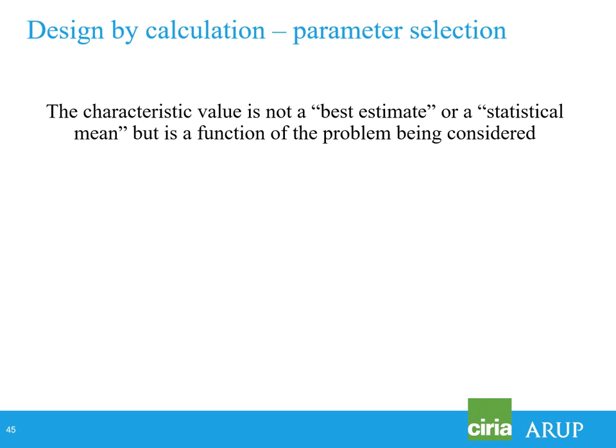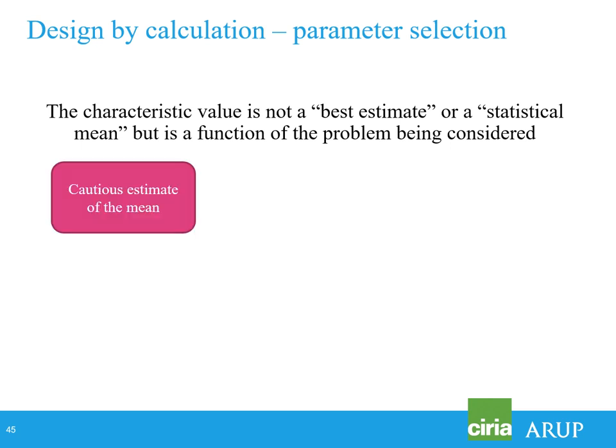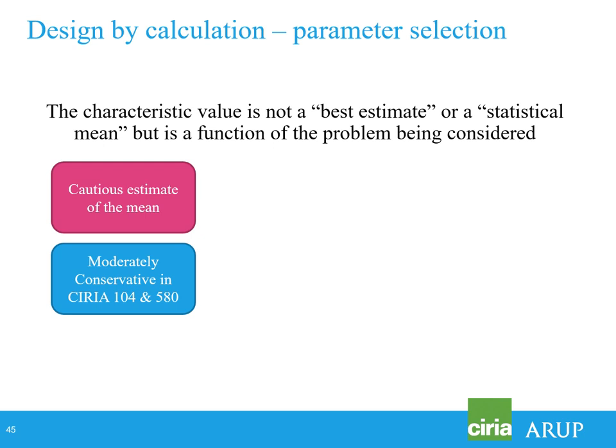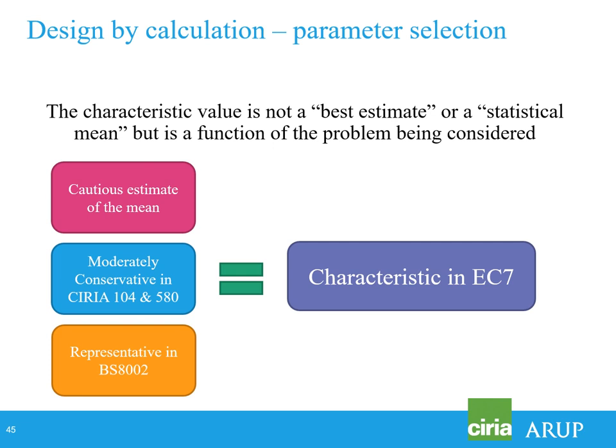Previous guides used different phrases: 'cautious estimate of the mean,' 'moderately conservative' in R104 and C580, and 'representative values' in BS8002. This caused some consternation — people wondered whether these were all different things. We took the view with the Project Steering Group that these should all be treated as the same, and in Eurocode 7 terminology they're all 'characteristic.'